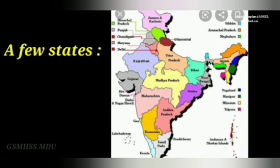Number 20: Punjab, capital Chandigarh, official language Punjabi. Number 21: Rajasthan, capital Jaipur, official language Hindi. Number 22: Sikkim, capital Gangtok, official language English and Nepali. Number 23: Tamil Nadu, capital Chennai, official language Tamil. Number 24: Telangana, capital Hyderabad (shared with Andhra Pradesh), official language Telugu.